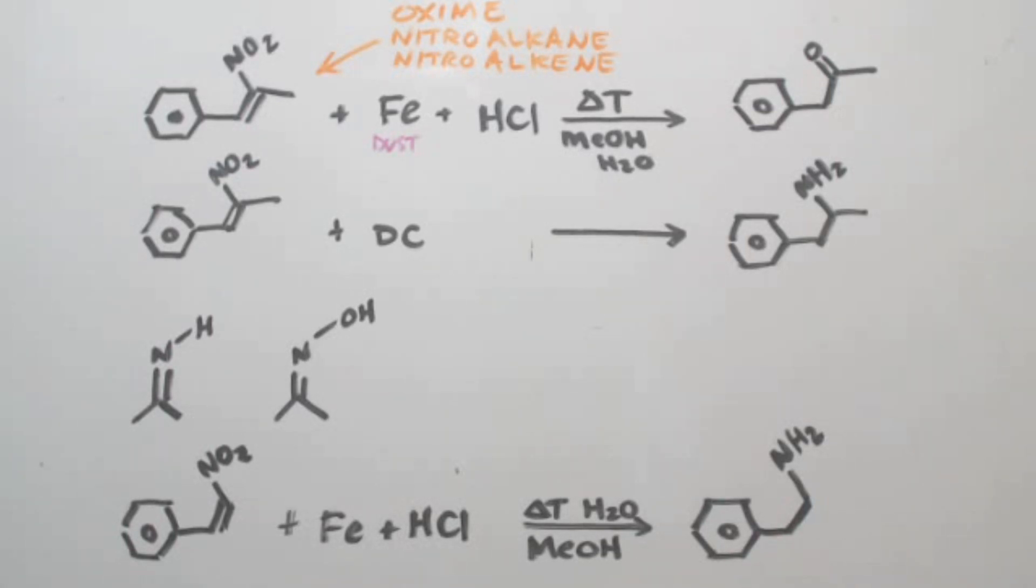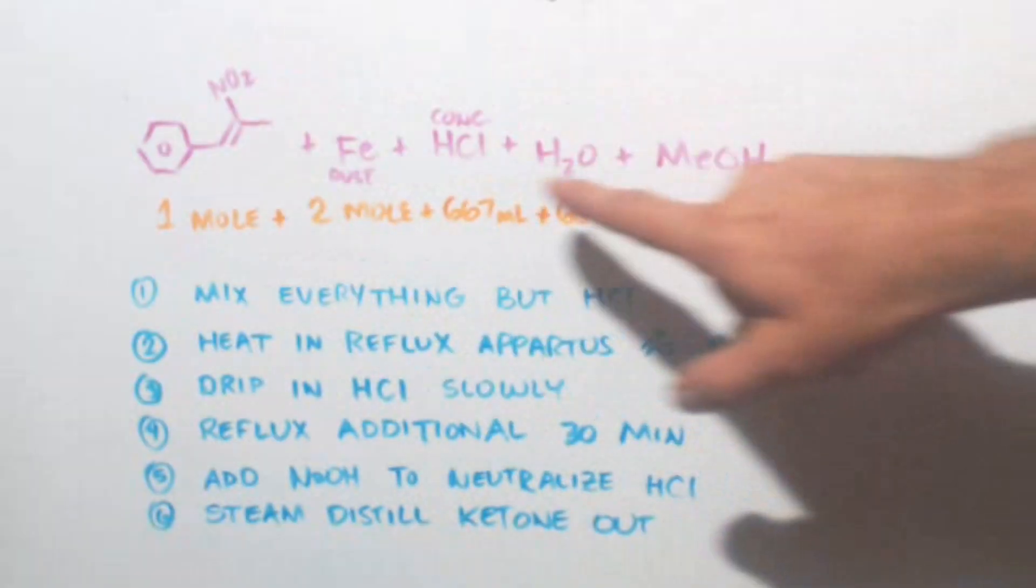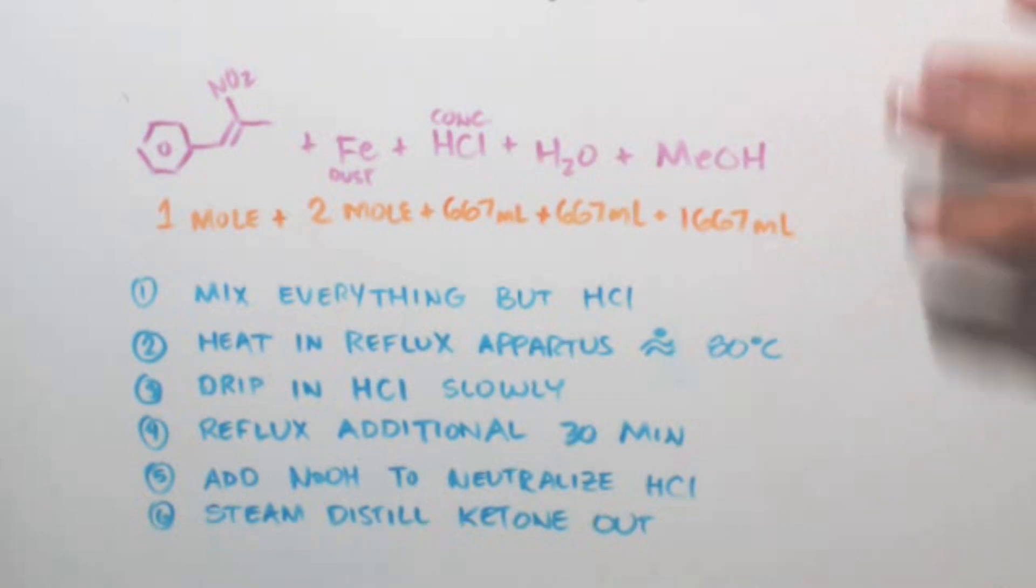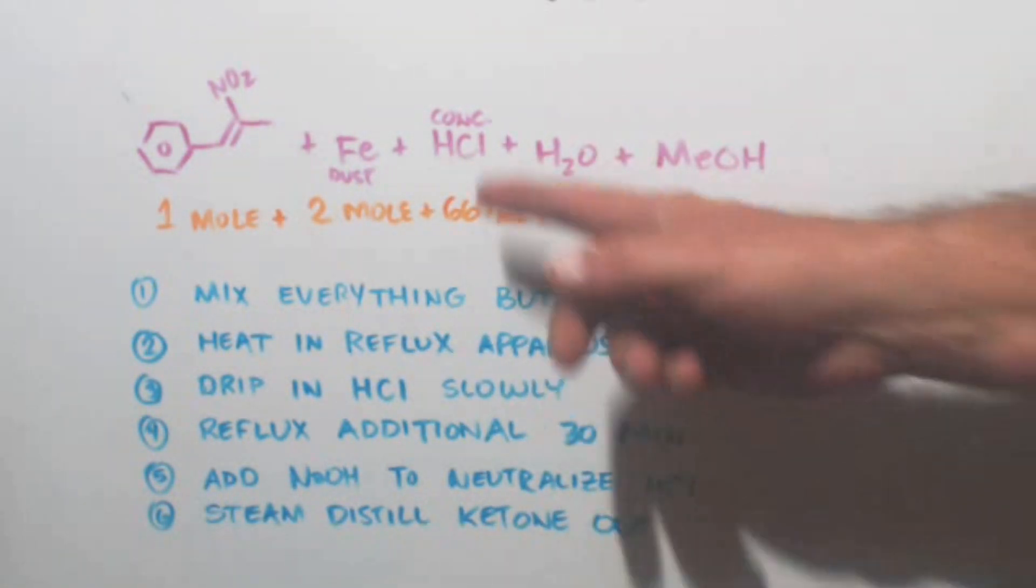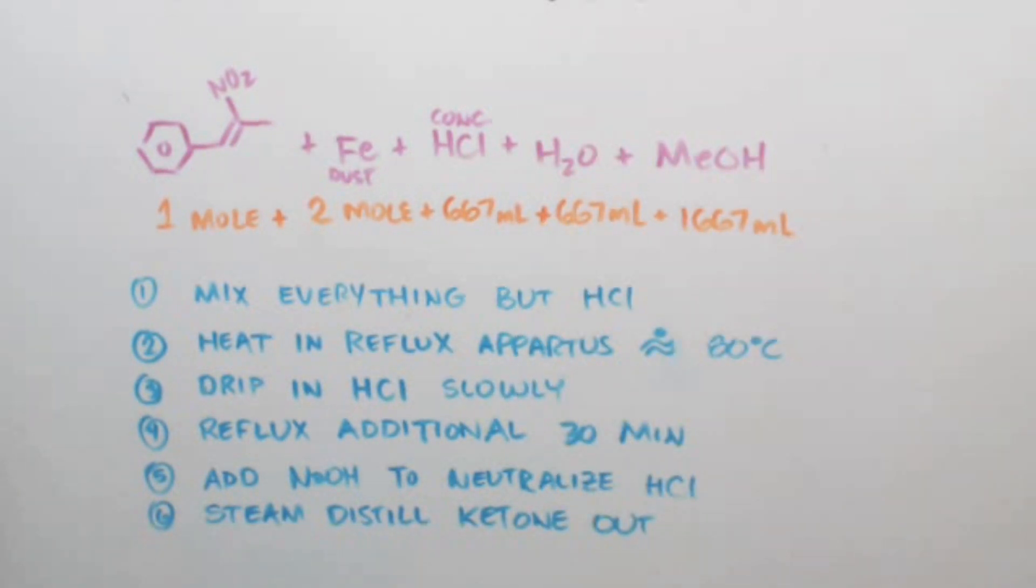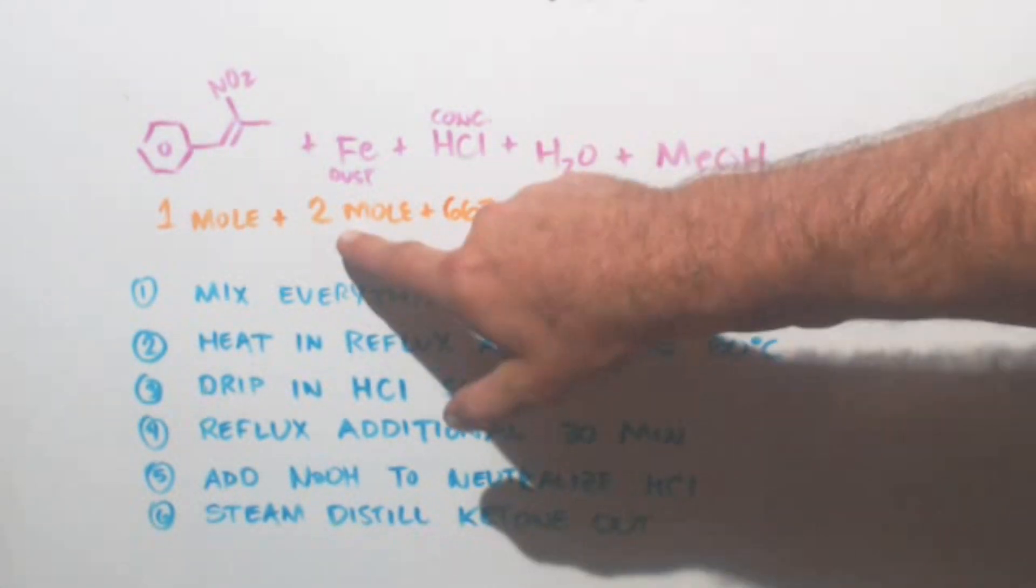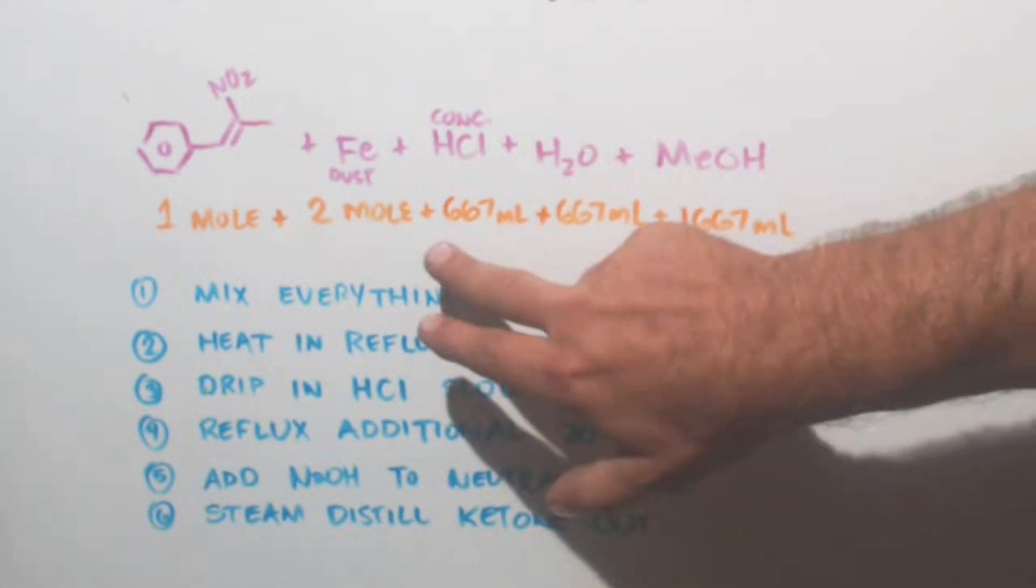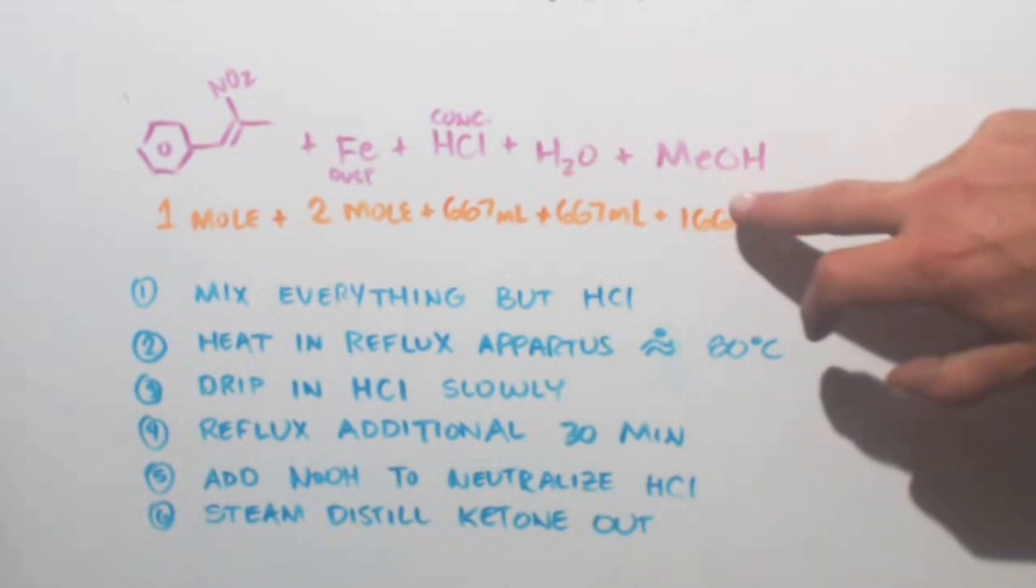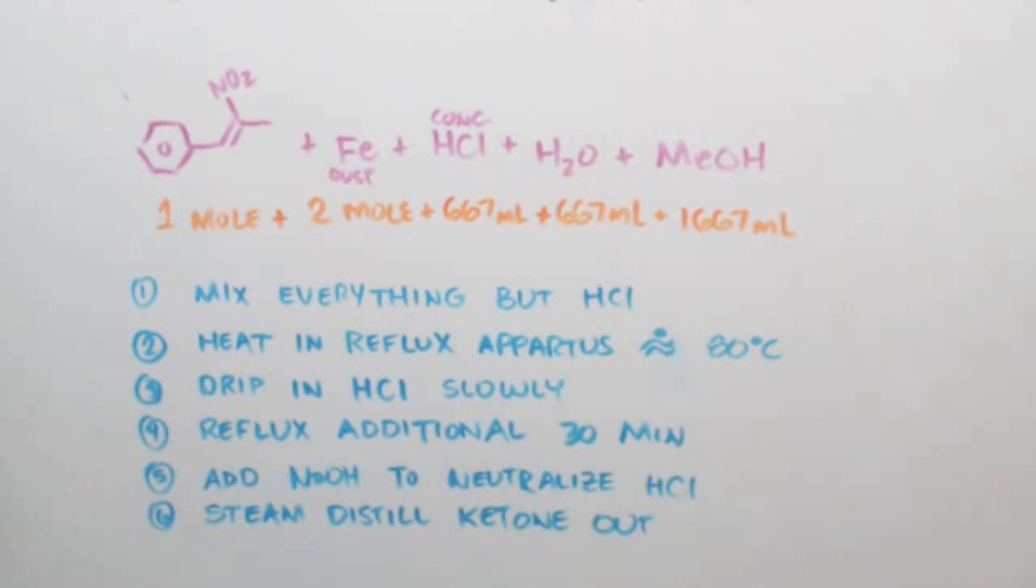Now you might say that doesn't tell me exactly how to make it. So here we're going to go to exactly how to make it. Here's the first part of the formula. I don't have the arrow to the next part because we don't care about that. We know that you're going to make P2P. One mole of your nitroalkene, two moles of iron, you want it to be dust, not big chunks. Concentrated hydrochloric acid, 667 milliliters for every mole. I've heard of people going as low as 200 milliliters. Two moles here, two moles here, and one mole there. But I think it'll work. This is what it says: 667 milliliters, same for the water. Methanol, 1,667 milliliters.